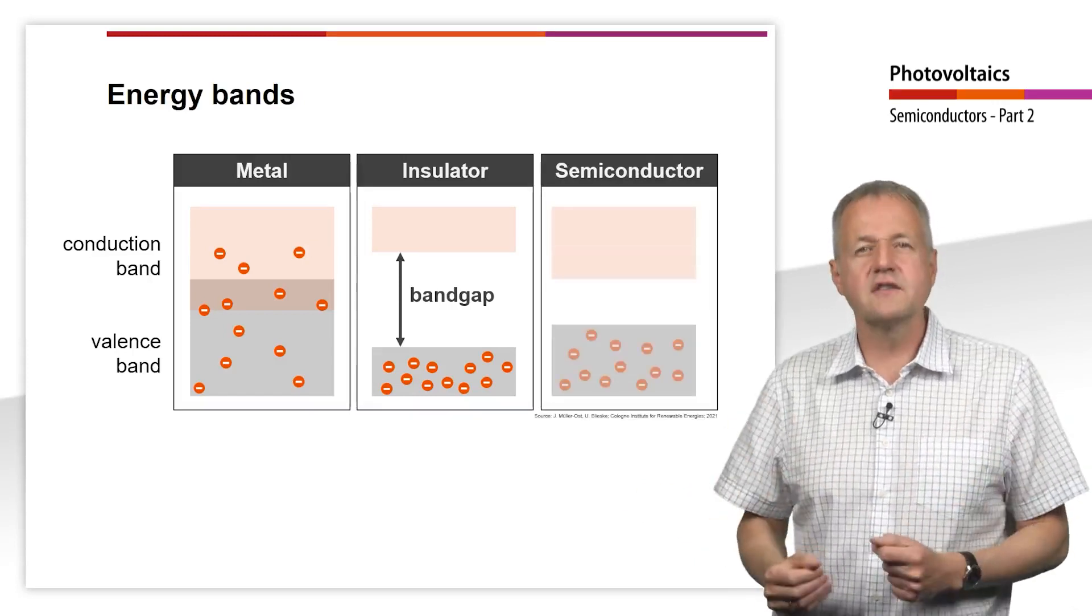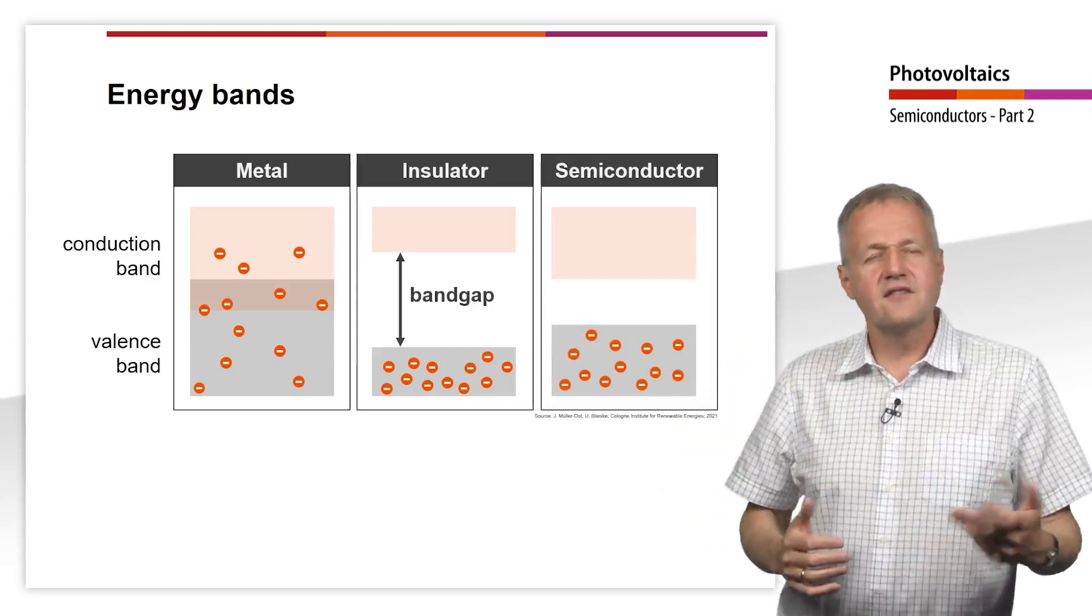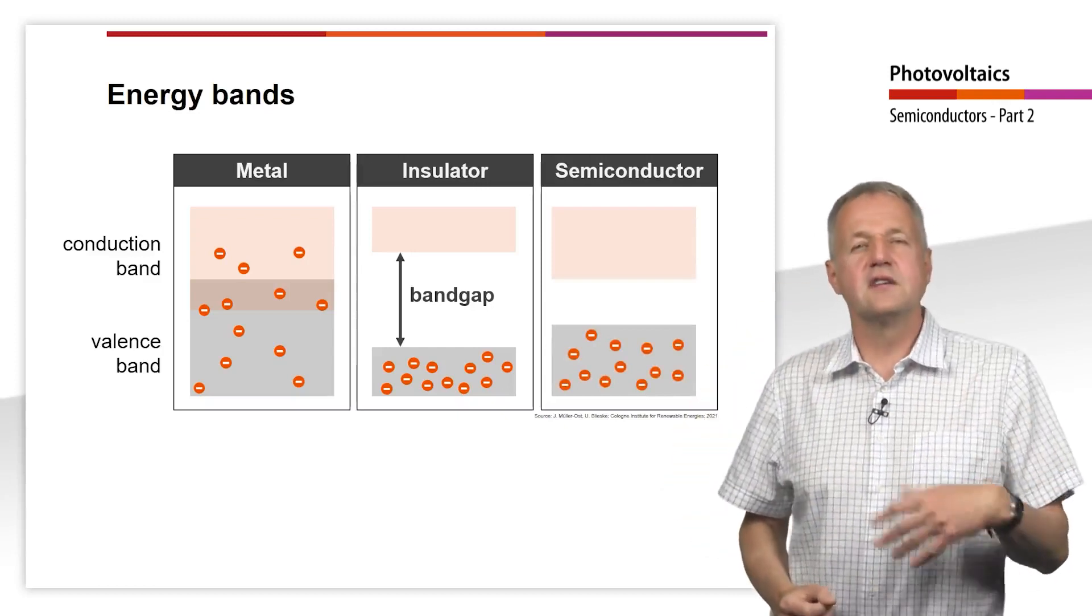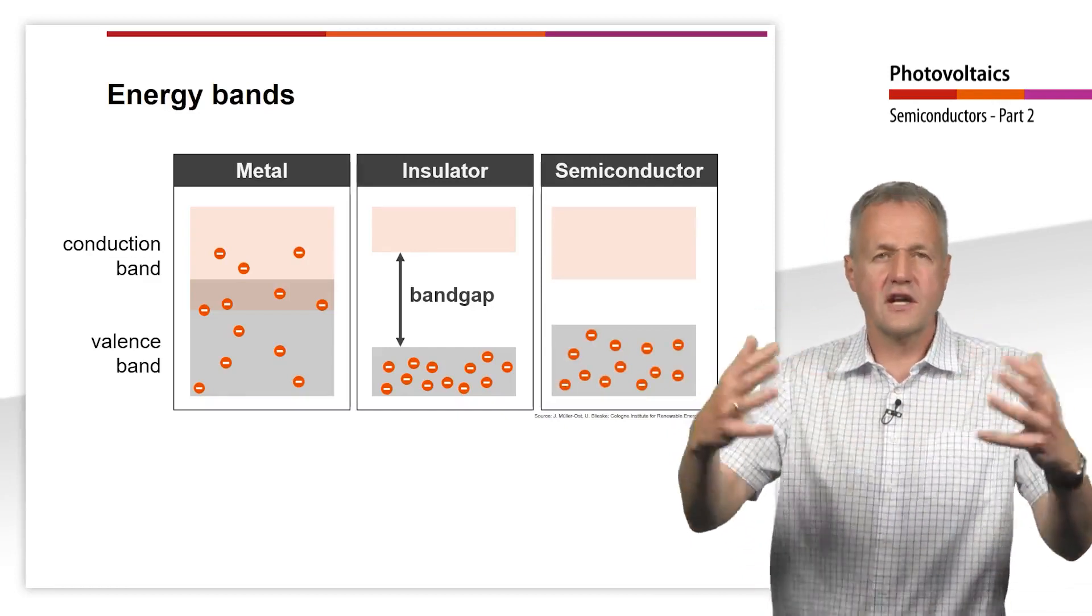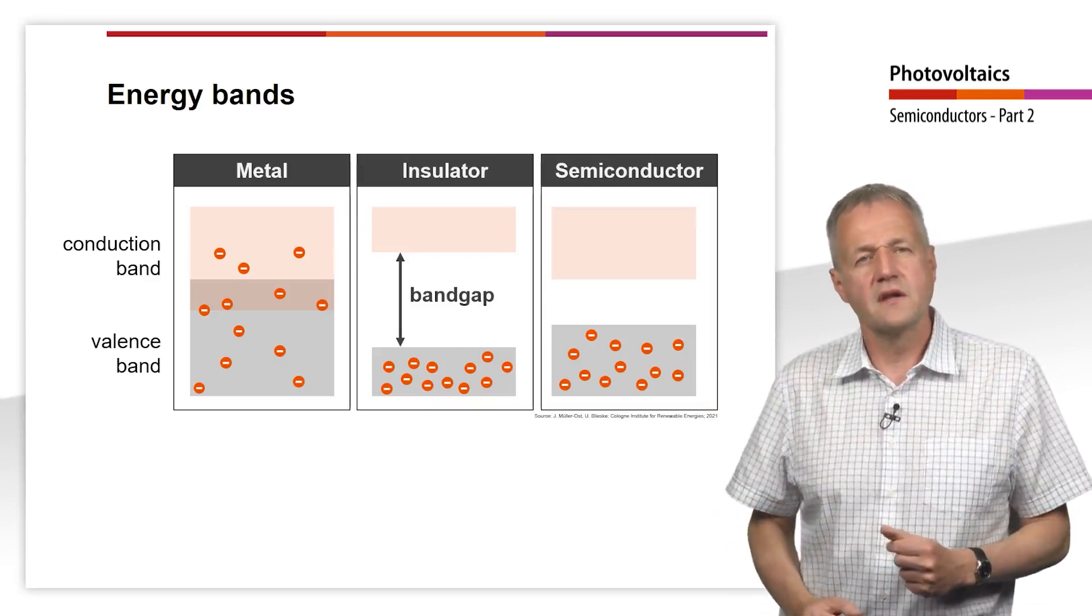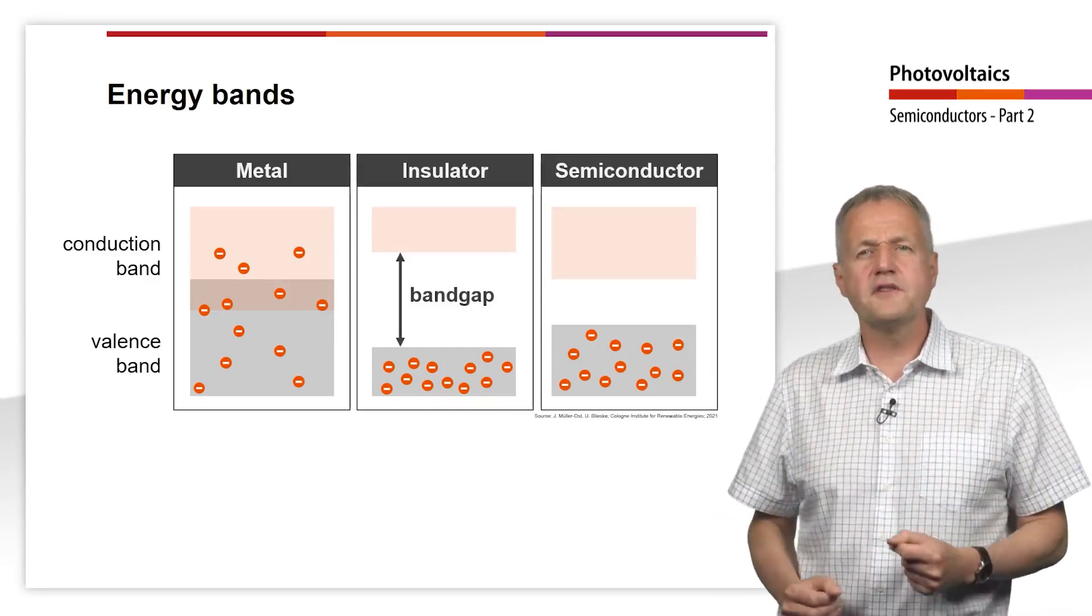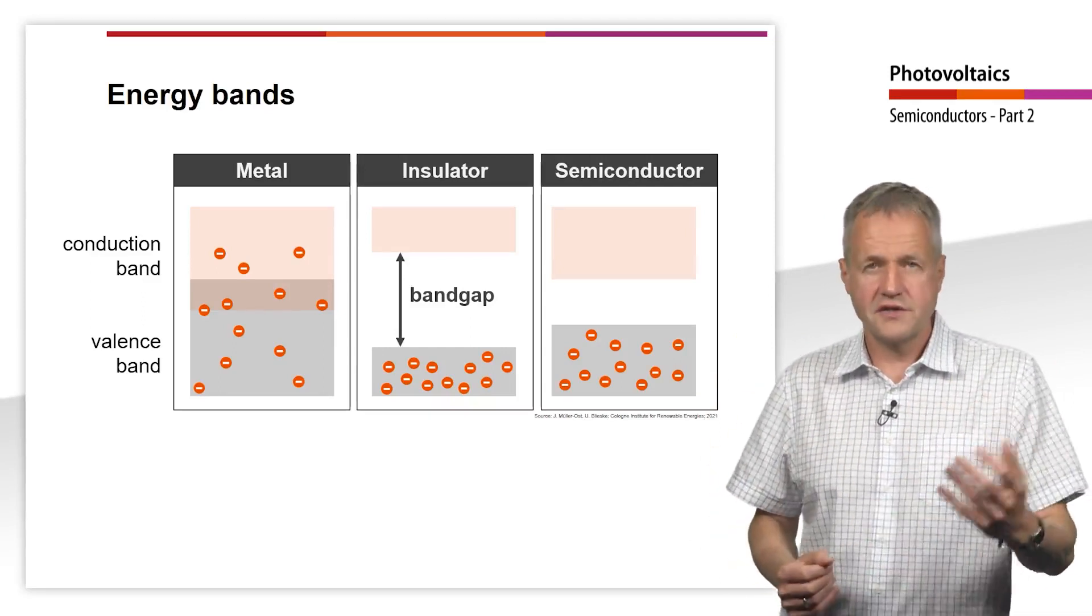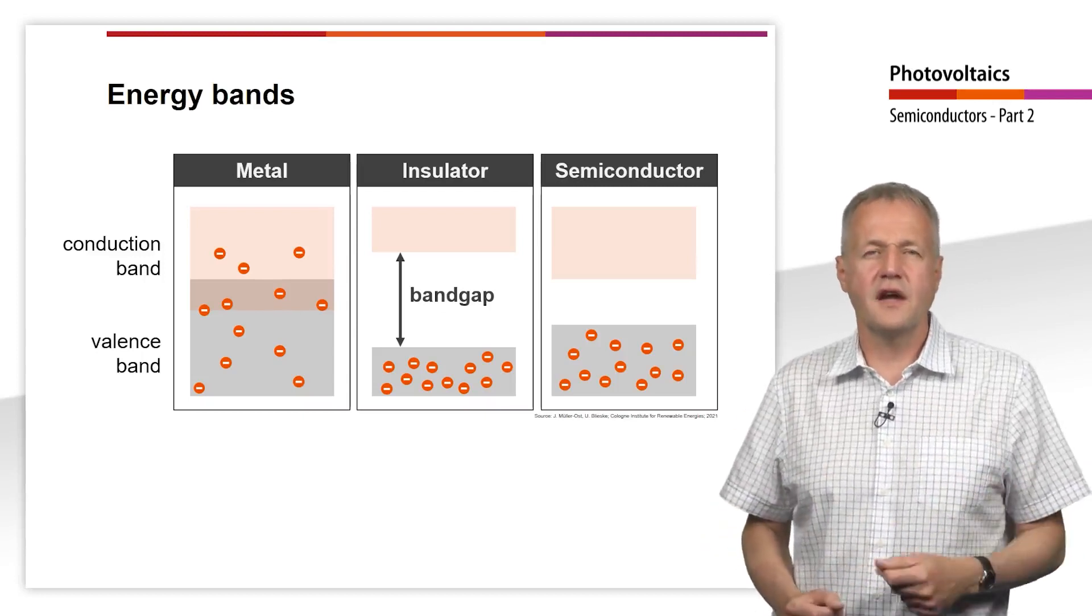In a semiconductor, the band gap is smaller and single electrons can, depending on the temperature, pass from the valence into the conduction band, leaving a hole in the valence band behind. If the band gap is larger than four electron volts, the material is called an insulator. If it is smaller than four electron volts, it is called a semiconductor.